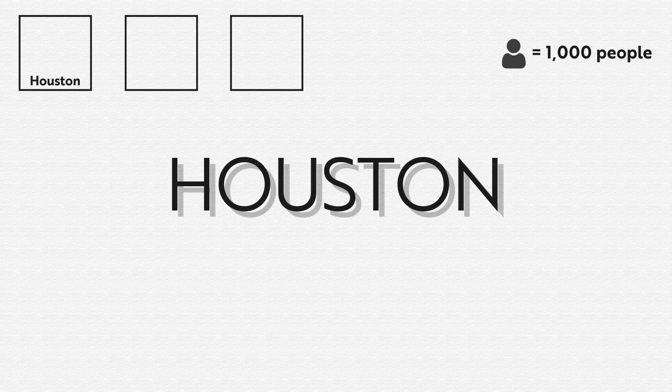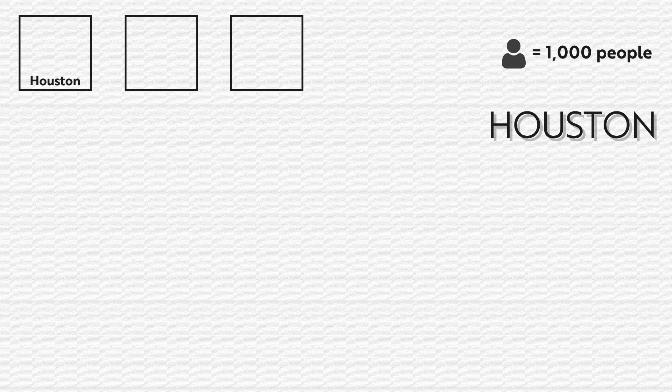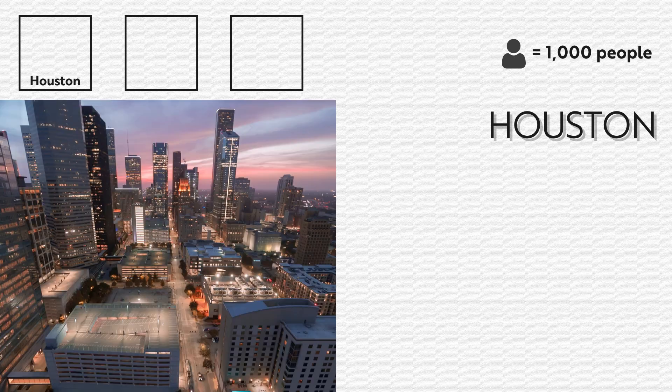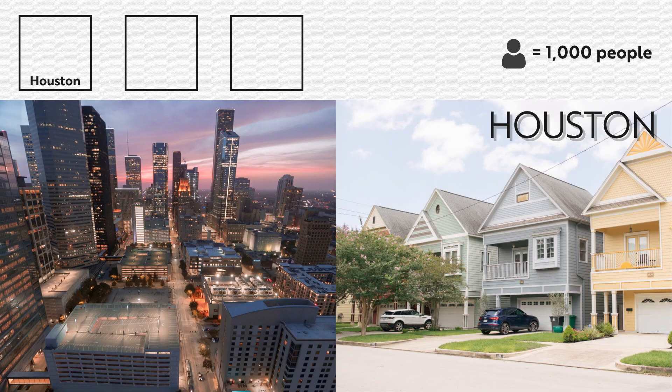Okay, do you have your answer? We're going to run through our three cities right now, using those same density boxes from before to illustrate the density of each city. First up, we have Houston. Hopefully you did not guess that Houston was the densest of our three cities because it's absolutely not. While downtown Houston looks quite built up, much of the rest of it actually looks more like sprawl. Houston only has about 3,500 people per square mile. As far as cities go, that's really low density.